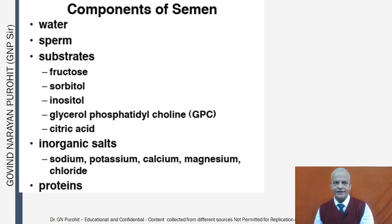Semen is made up of water, spermatozoa, and substrates such as fructose, sorbitol, inositol, glycerol, phosphatidylcholine, and citric acid, along with inorganic salts including sodium, potassium, calcium, magnesium, and chloride, and proteins.